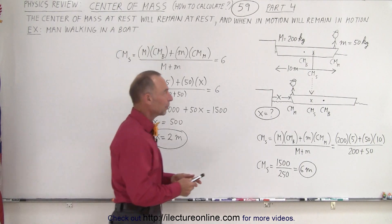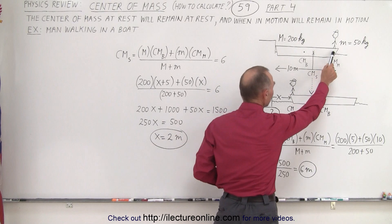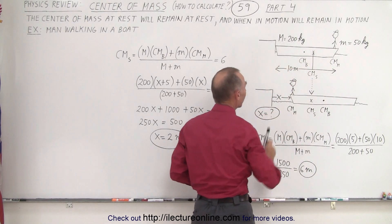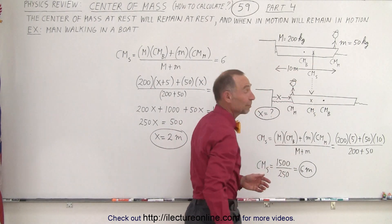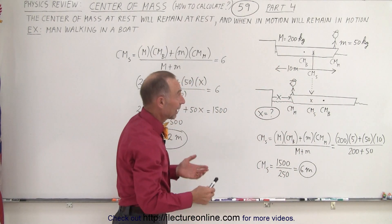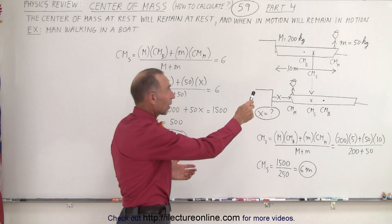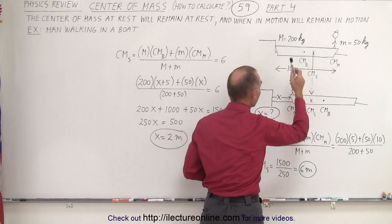So here we have the example where we have a person standing on one edge of the boat. The boat is touching the dock on the other side. The length of the boat is 10 meters, the mass is 200 kilograms, the man's mass is 50 kilograms, and now the man is going to walk across from one end of the boat to the other end of the boat.